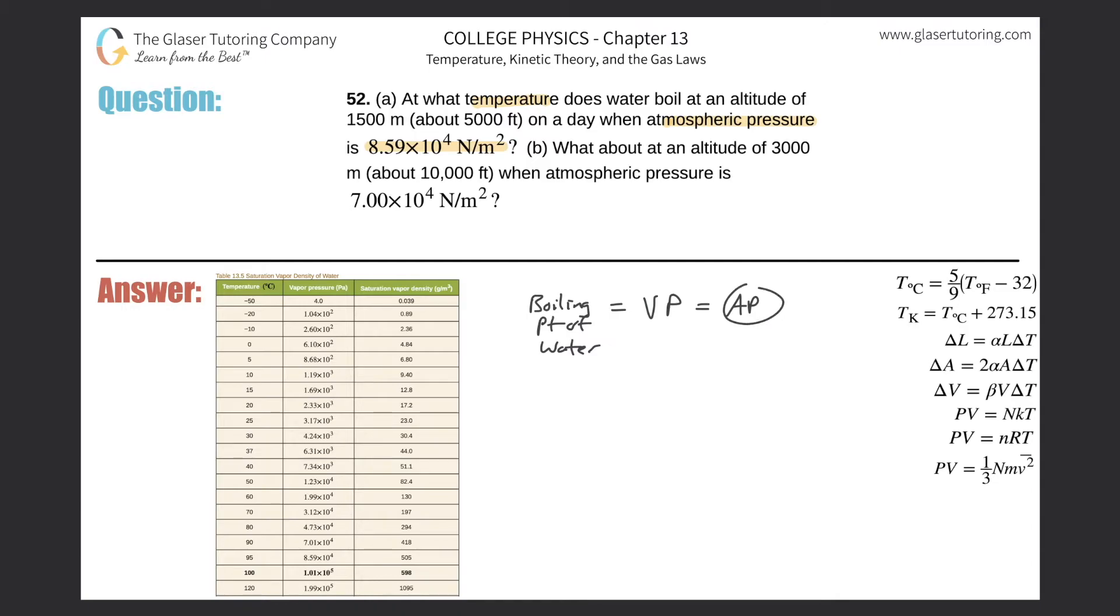When atmospheric pressure equals vapor pressure, then the boiling point will be found by looking up the value on the table and seeing what temperature value correlates with that vapor pressure.